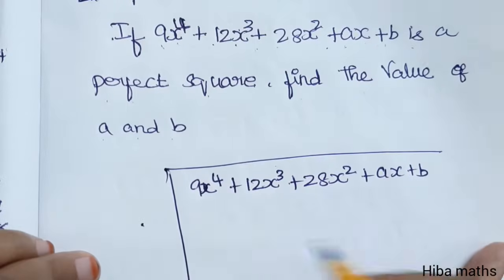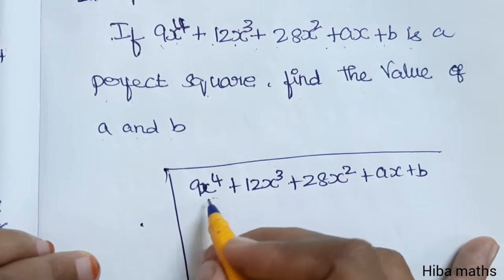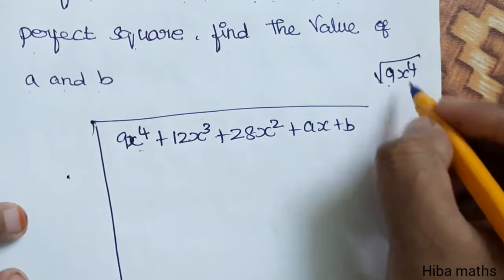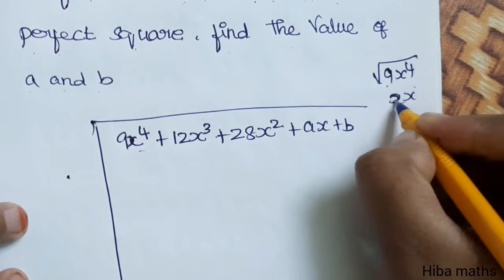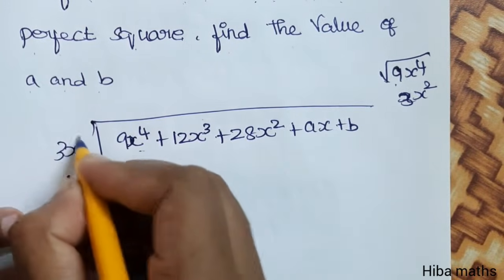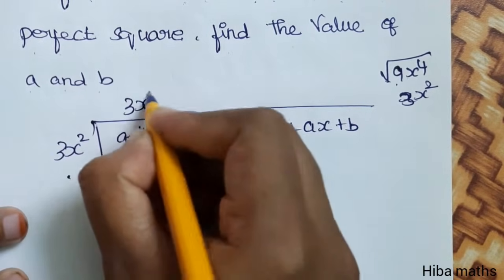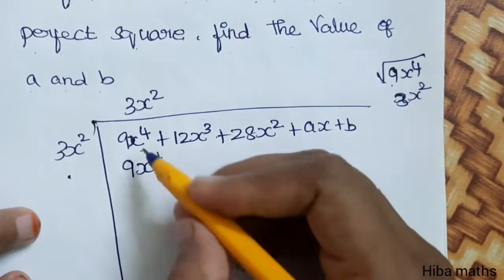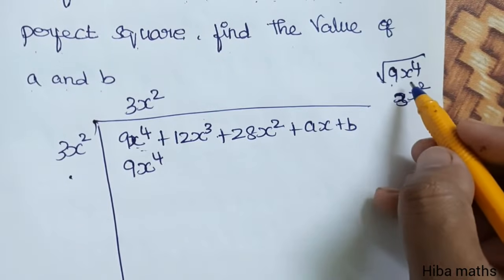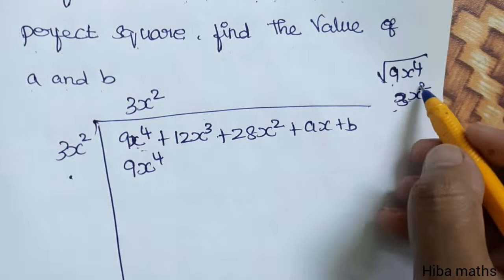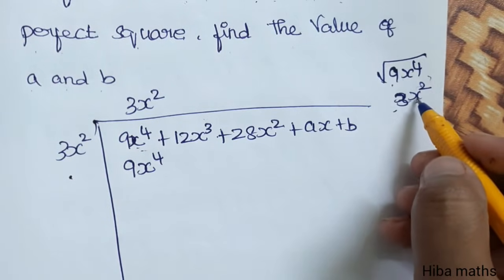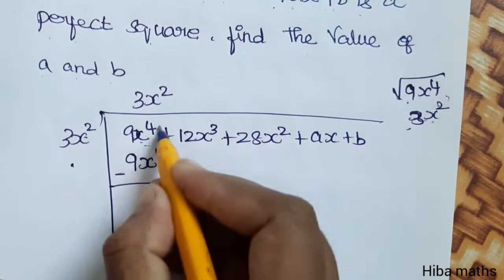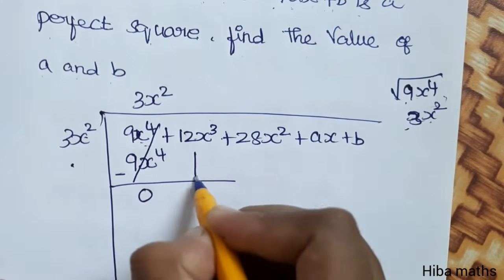How do you explain the first term? The first thing is 9x⁴, take the square root. The square root is 3x². 9x⁴ minus 9x⁴, cancel it, it is 0. Bring down two numbers.